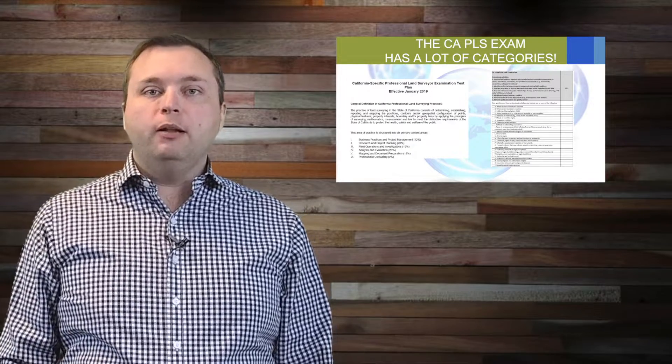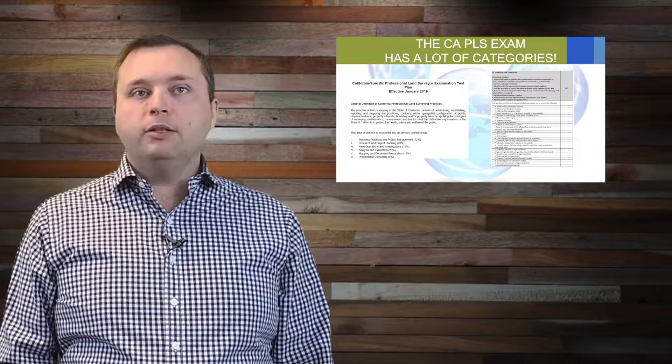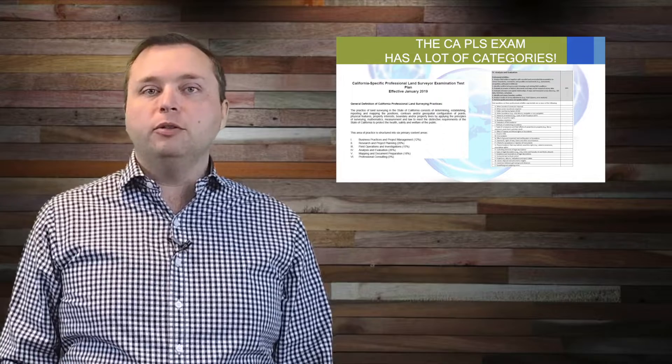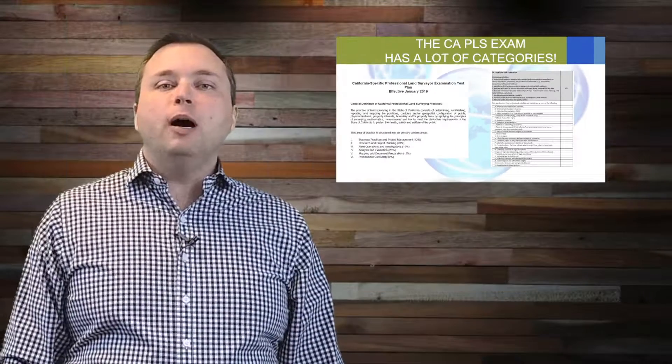When you look at the California PLS rubric or the blueprint, it's unbelievable. It's got these five or six categories of questions, but within each of those categories there are ten or twenty or fifty different skills you have to have. That's just mind-blowing because there's only a 70 question exam and they're going to cover everything in surveying from construction to boundary to legal descriptions to coordinates.